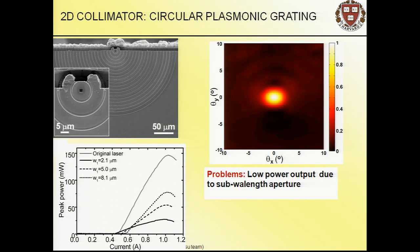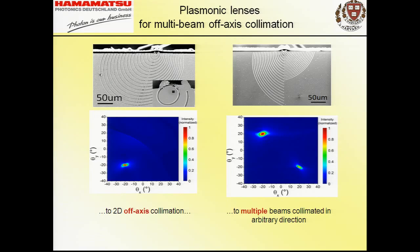This collimator on the Hamamatsu laser gives a very nice spot in the far field with small divergence. The power output is considerably less than the previous device—around 20%. This is not loss due to the metal, because at mid-IR wavelengths plasmonic losses are very well managed. It's related to having a real sub-wavelength aperture.